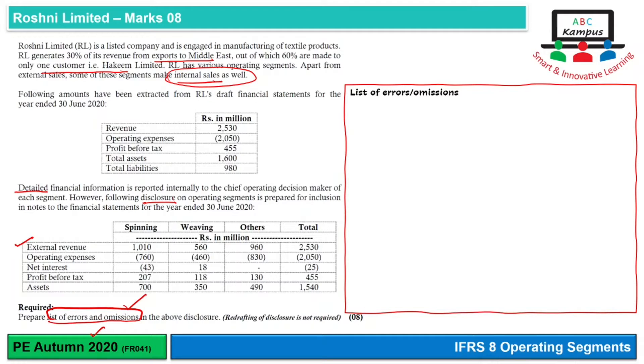Pehla issue yeh hai ki internal intersegment sales thi, usko disclose nahi kiya gaya. So yeh pahla issue hai hamare paas.